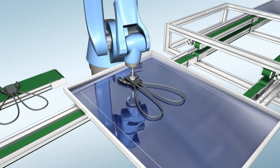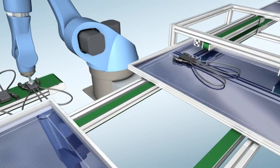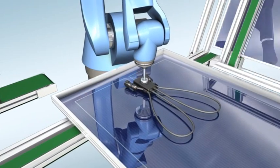The SunClix junction box was developed especially for the automated production of photovoltaic modules.